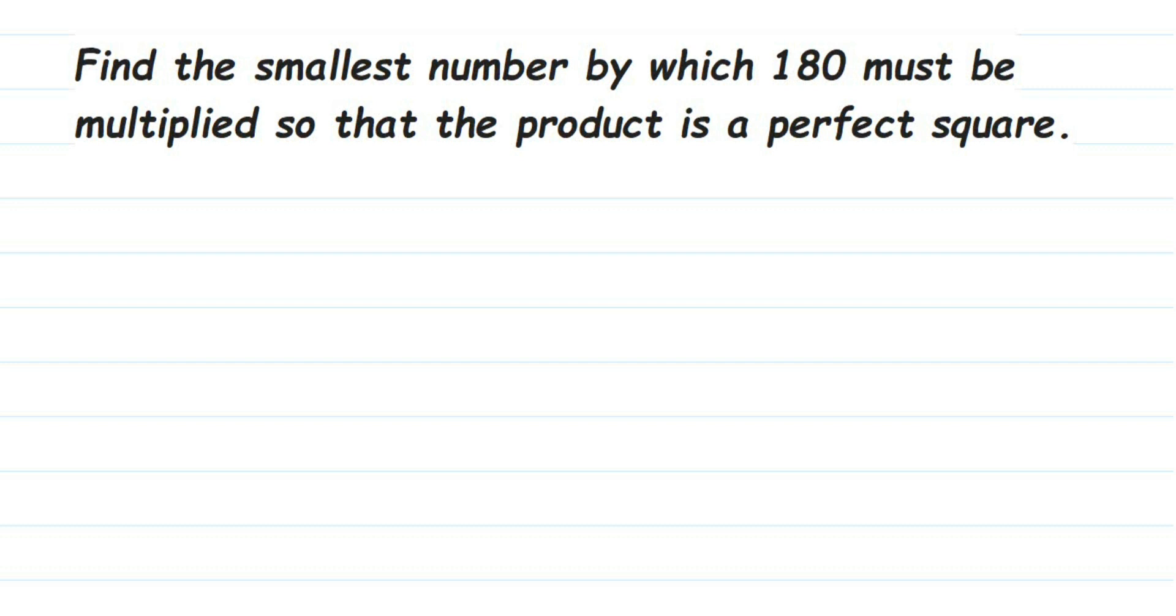Hey everyone, here's a question from square and square root: find the smallest number by which 180 must be multiplied so that the product is a perfect square. This number 180 is not a perfect square. We have to make it a perfect square by multiplying with the smallest number.